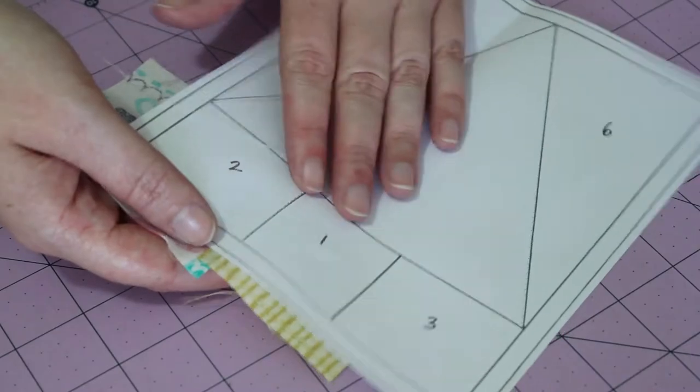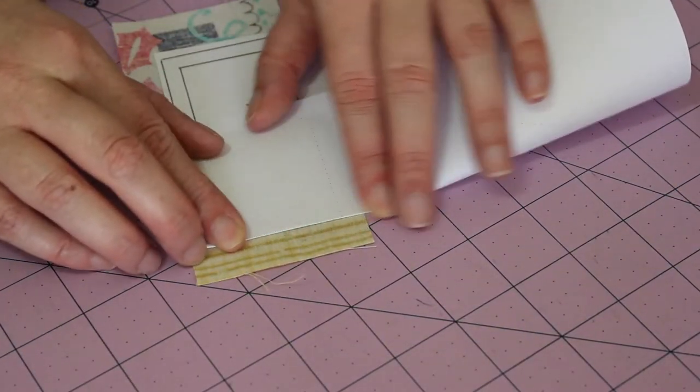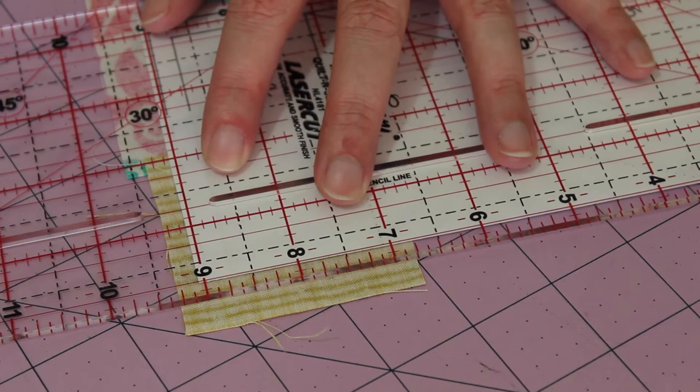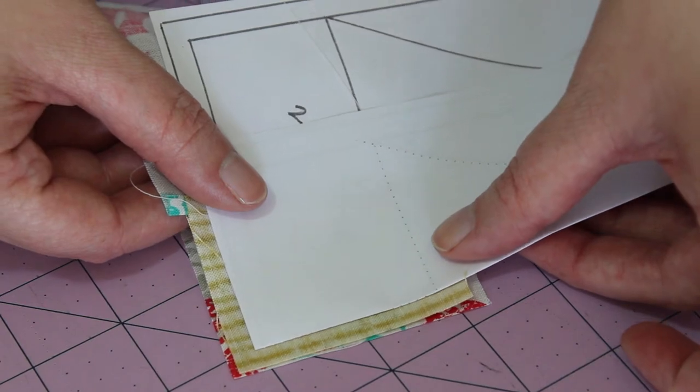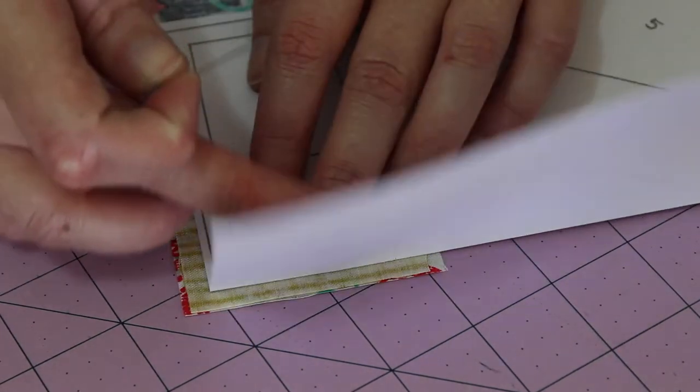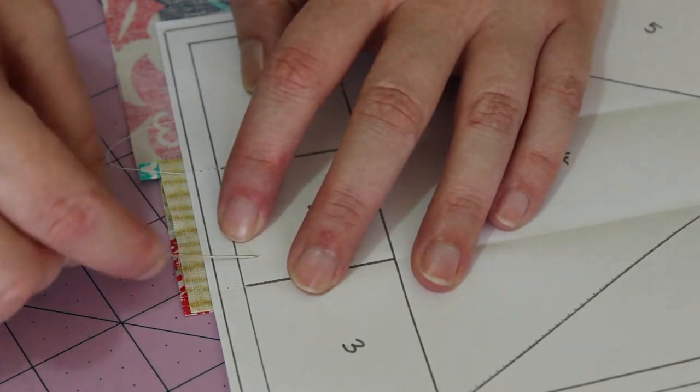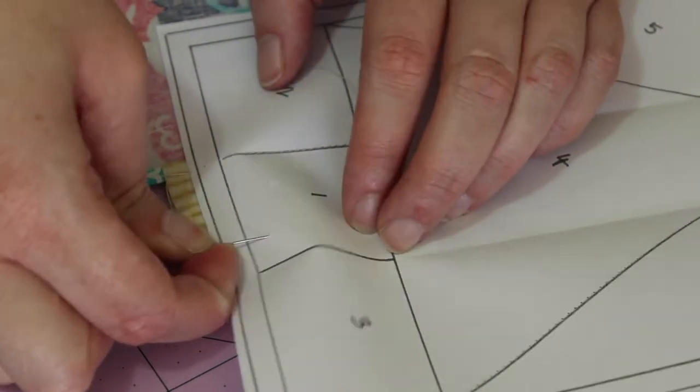Flip the pattern back over and fold down the section three line, and then using ruler and blade, trim the edge down to a quarter inch. Place the fabric for section three underneath and align the pieces into place just like last time. Open out the pattern and pin all three layers into place.